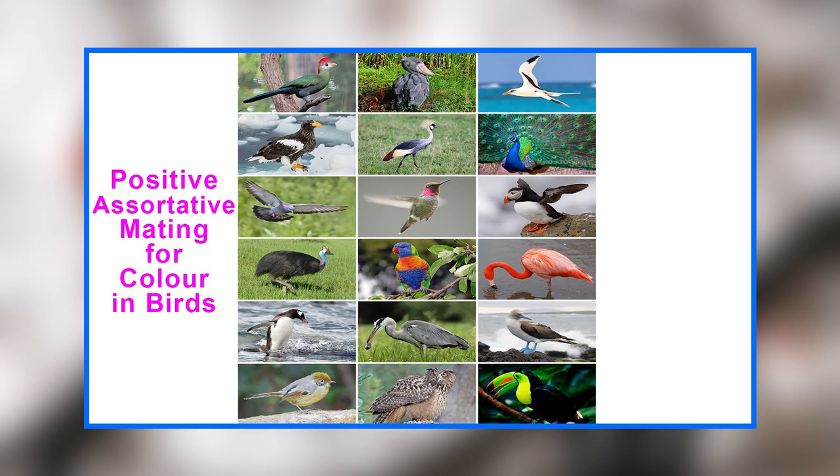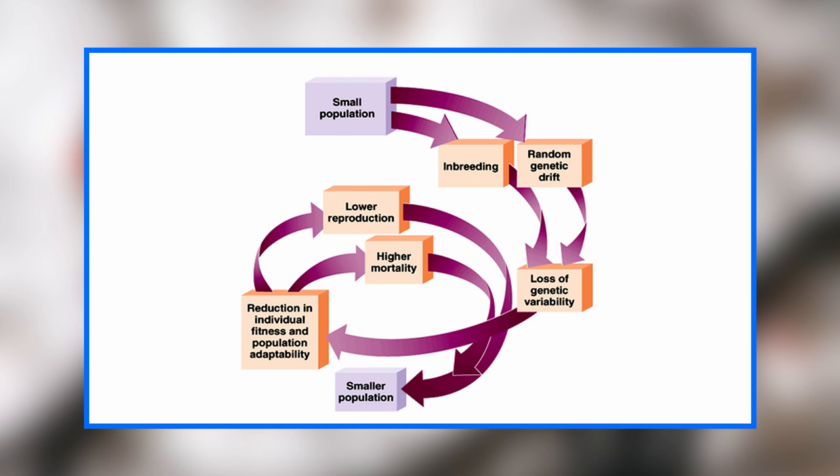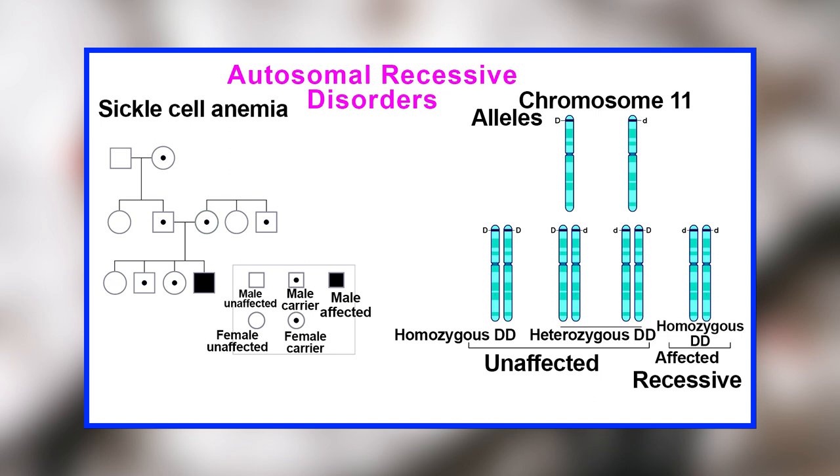In birds whose coloration represents well-being and fecundity, positive assortative mating for color increases the chances of genes being passed on and of offspring being in good condition. Also, positive assortative mating for behavioral traits allows for more efficient communication between individuals, enabling them to cooperate better to raise their offspring. On the other hand, mating between individuals of genotypes that are too similar allows for the accumulation of harmful recessive alleles, which can decrease fitness. Such mating between genetically similar individuals is termed inbreeding, which can result in the emergence of autosomal recessive disorders.